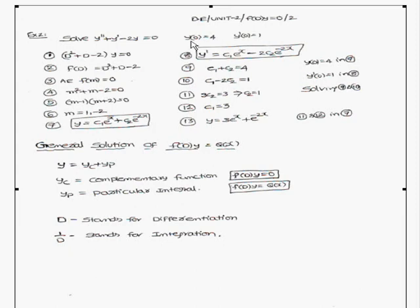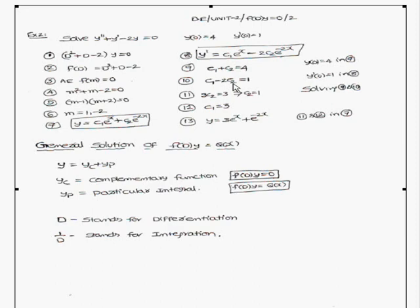The initial conditions y(0) = 4 and y'(0) = 1 are given to solve for constants c1 and c2. Differentiating y gives y' = c1·e^x - 2c2·e^(-2x). Substituting y(0) = 4 gives c1 + c2 = 4. Substituting y'(0) = 1 gives c1 - 2c2 = 1. Solving these two equations gives c1 = 3 and c2 = 1. Therefore the solution is y = 3e^x + e^(-2x).